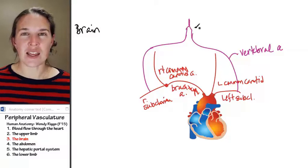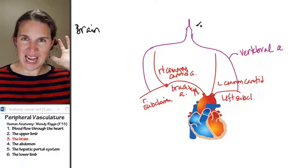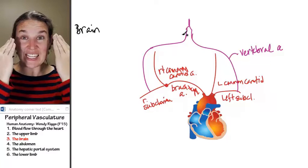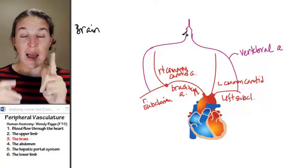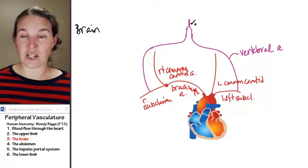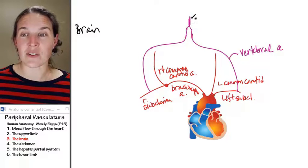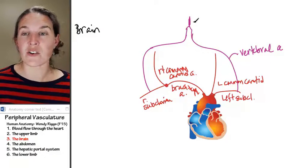They join each other at the base of your brain, so now they're actually in your skull. I'm going to show you what this looks like, but they join together—the two vertebral arteries join together to form the basilar artery.